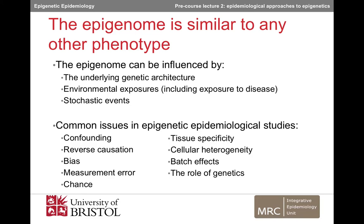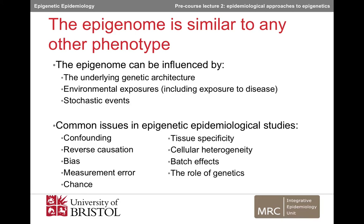And there are also some issues that are more specific to epidemiological studies of epigenetics. These include tissue specificity, cellular heterogeneity, batch effects, and confounding by genetics. Over the next few slides, we'll discuss each of these issues and approaches to mitigate their impact on the interpretability of results of epigenetic epidemiological studies.